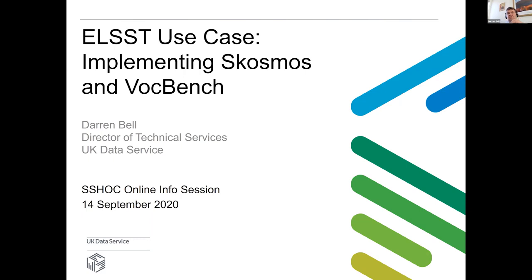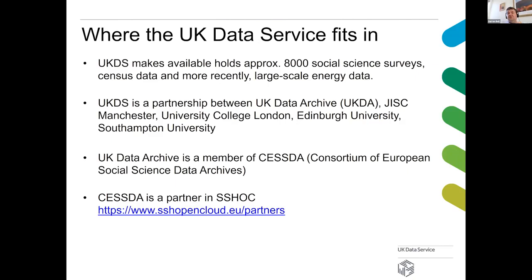So where the UK Data Service fits into all of this: very quickly, we're a social sciences repository or archive and we hold around 8,000 surveys, census data, and more recently we've been branching out into different data sources like energy data. The UK Data Service is a consortium partnership between the Data Archive, who I work for, JISC up at Manchester, University College London, Edinburgh, and Southampton. So the UK Data Archive is the lead partner in the UK Data Service, but there are a number of other important players there as well.